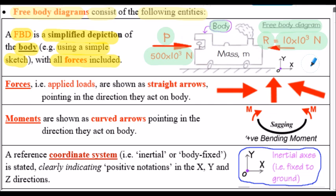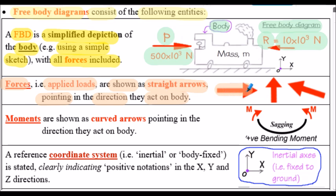You can apply Newton's second law here and determine the acceleration of the train. Forces, or applied loads, are depicted as straight arrows pointing in the direction that they act on the body — horizontal force shown here, vertical force shown here, or inclined force shown here.